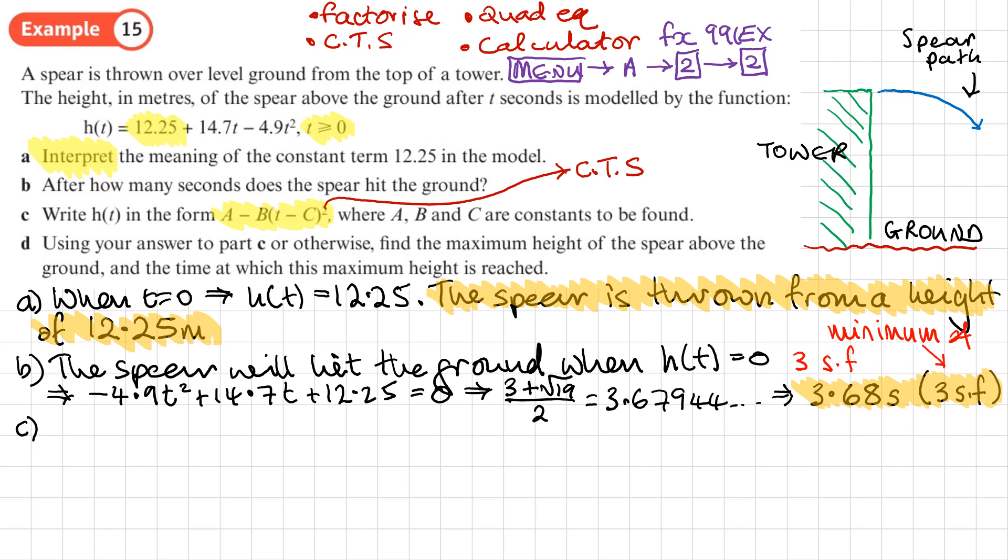So let's write our quadratic down: -4.9t² + 14.7t + 12.25. And what I need to do is to factorize out the -4.9, so we'll do that first. -4.9 and then divide everything by -4.9. So let's do 14.7 divided by -4.9, that's -3, so -3t. And then we'll do 12.25 divided by -4.9, so we're factorizing that out: -5/2.